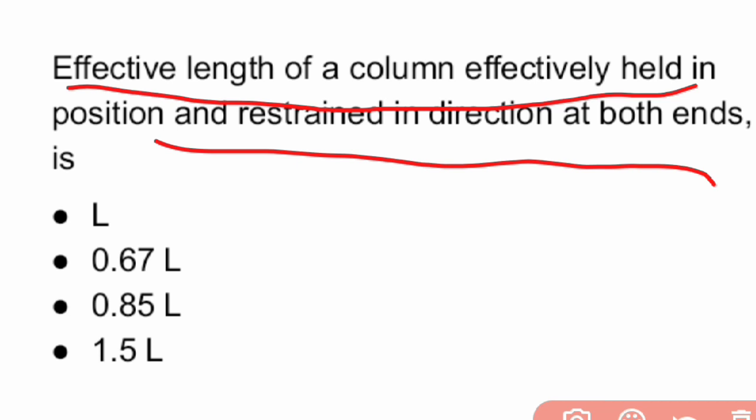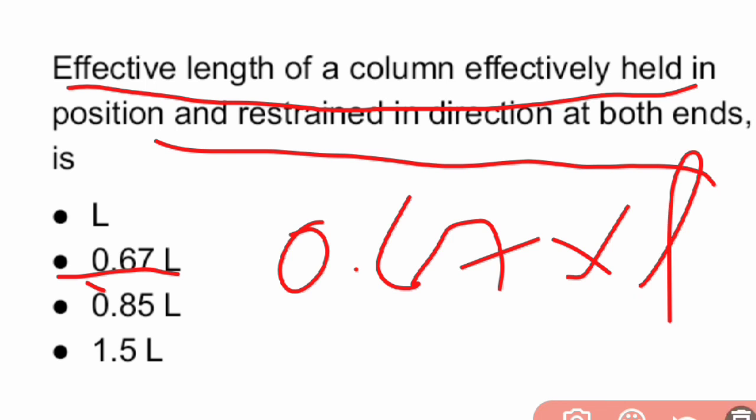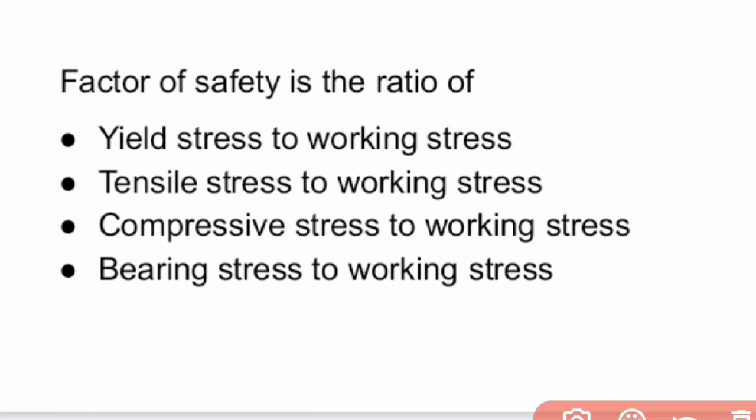Next question: the effective length of a column effectively held in position and restrained in direction at both ends is what? The effective length is 0.67 times the length of the column, i.e., 0.67L.